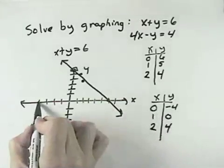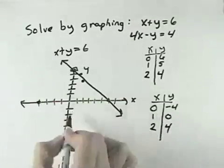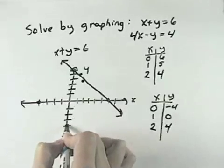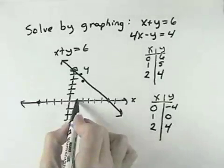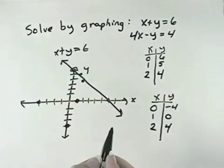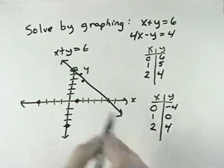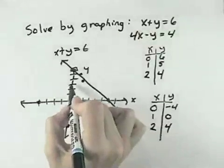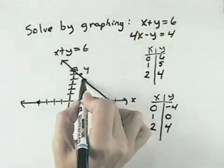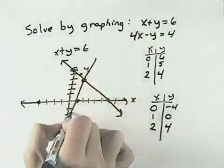So I have (0, negative 4). Whoops, wrong direction. Sorry, x is 0, y is negative 4 would be here. x is 1, y is 0. And finally, x is 2, y is 4. I can see that's the point where they intersect.